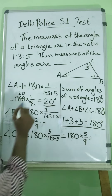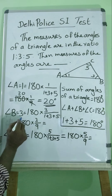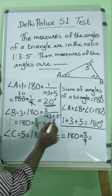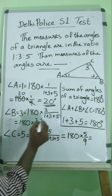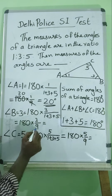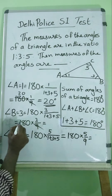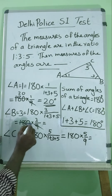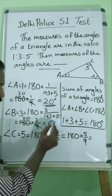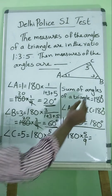Then Angle B, with ratio 3, equals 180 times 3 divided by 9. Here 9 cancels, giving us 20 times 3, which equals 60 degrees. So the second angle is 60 degrees.